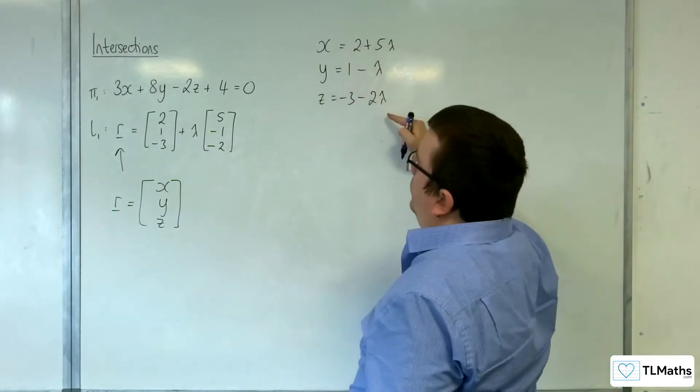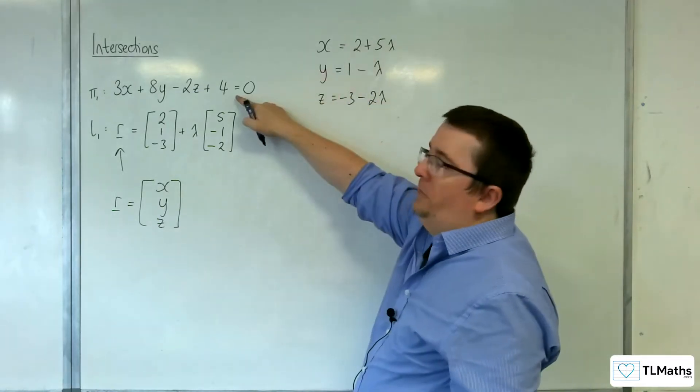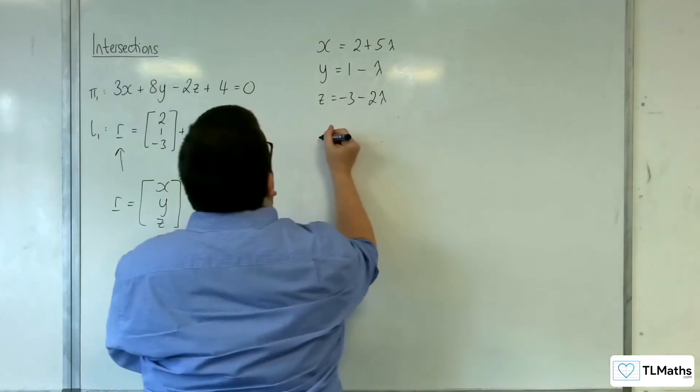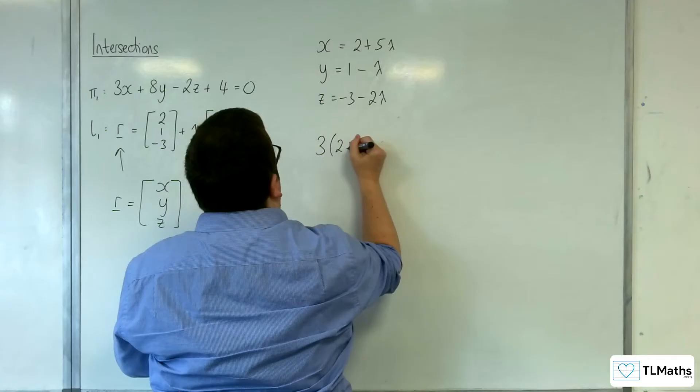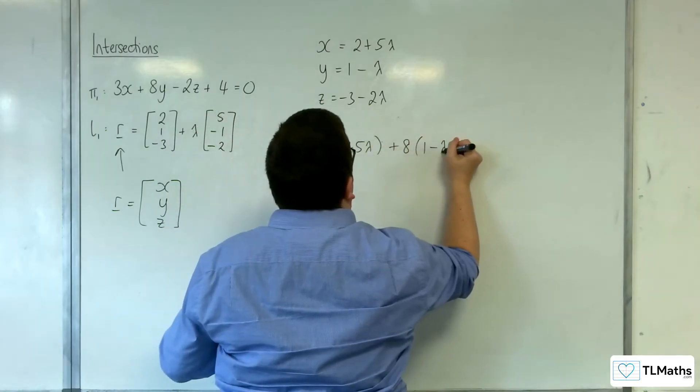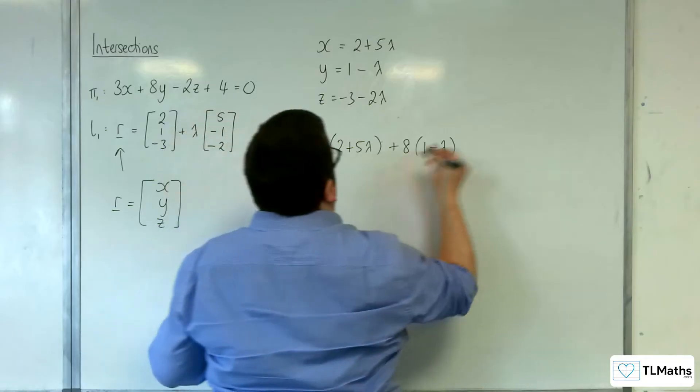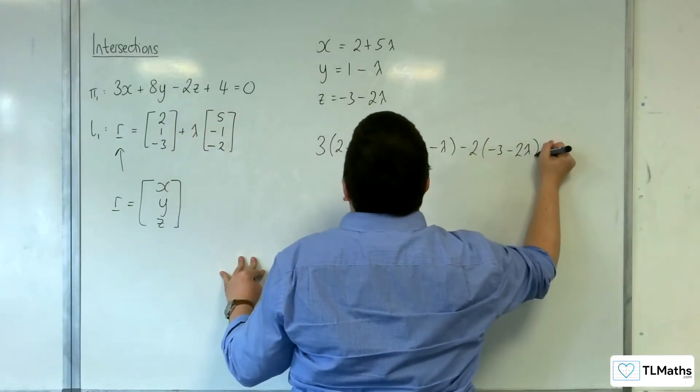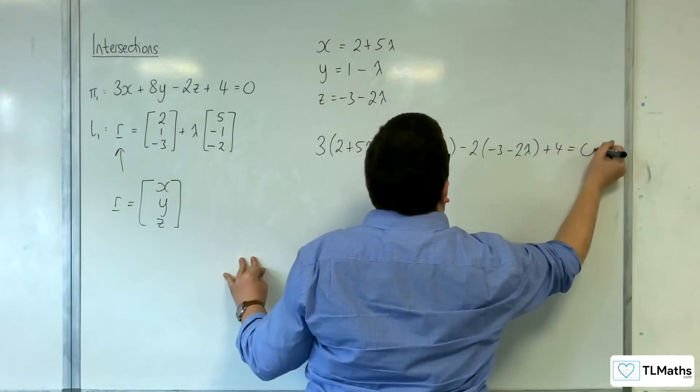So this is your X, Y and Z, which we can now substitute into the equation of the plane. So 3 lots of 2 plus 5 lambda, plus 8 lots of 1 take away lambda, take away 2 lots of minus 3 take away 2 lambda, plus 4 is equal to 0.